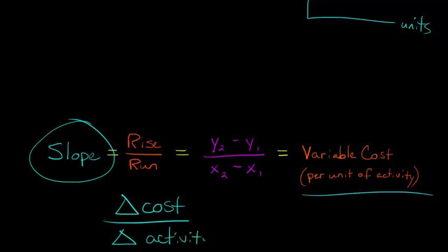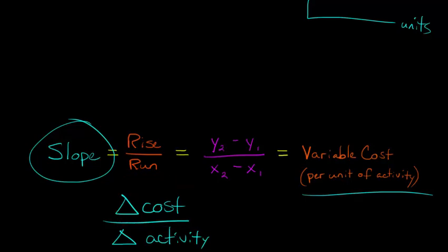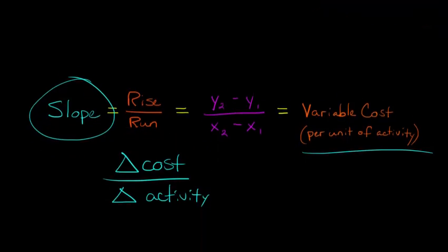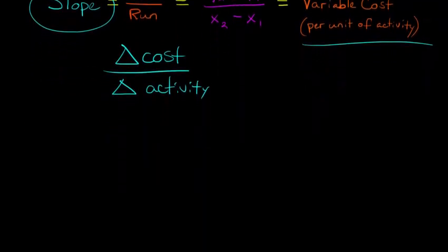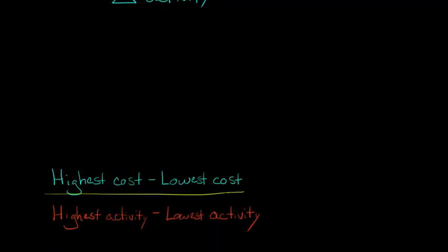Activity could be something like the number of units produced. We need an estimate for each — we're going to take the highest level of activity and what the cost is there, and then what the cost is at the lowest level of activity, and look at the number of units. Let me just show this to you — it might be a little bit easier.